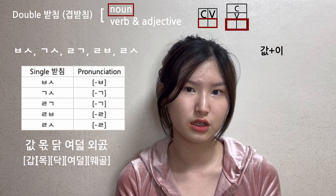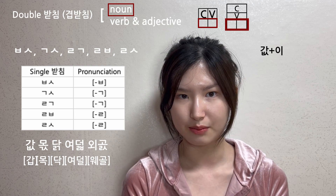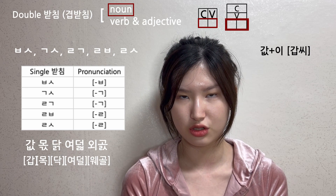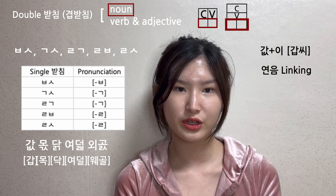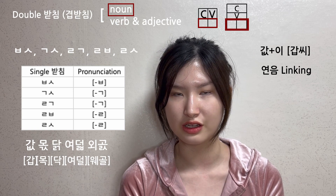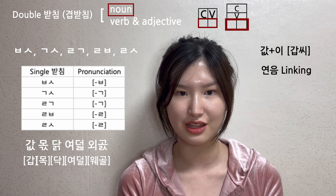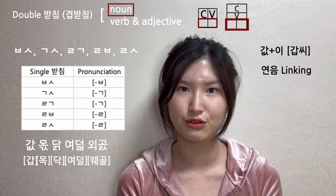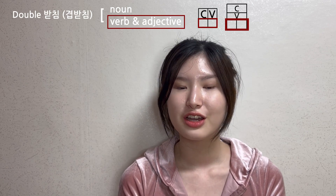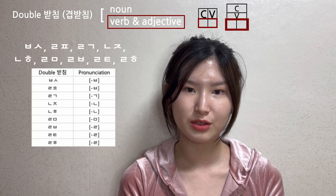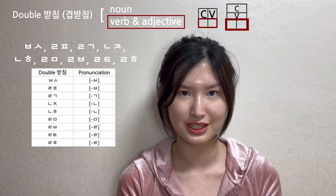When there comes a vowel after the double patchim, linking happens — which is called yarnum — so we get to pronounce every consonant in the double patchim. I'll cover this in the video on yarnum.